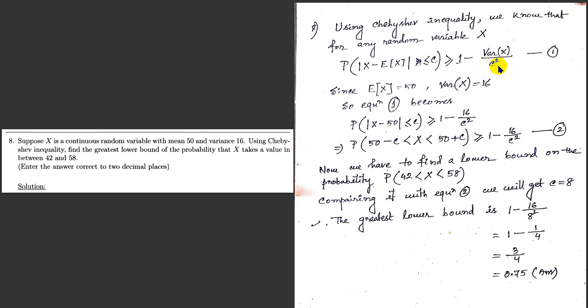From the question, we know that mean is 50 and variance is 16. So expected value is 50 and variance 16.